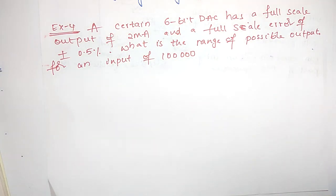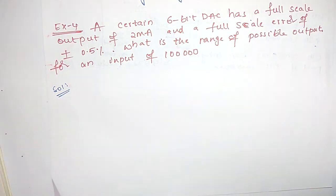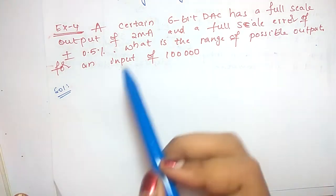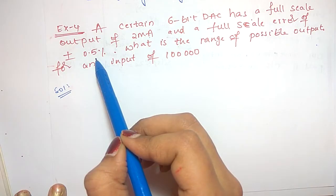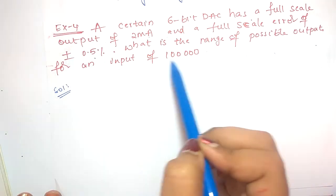The last question: a certain 6-bit DAC has a full scale output of 2 milliamps and a full scale error of plus or minus 0.5%. What is the range of possible outputs for an input of 100000? Given full scale output is 2 milliamps and the error is plus or minus 0.5%.